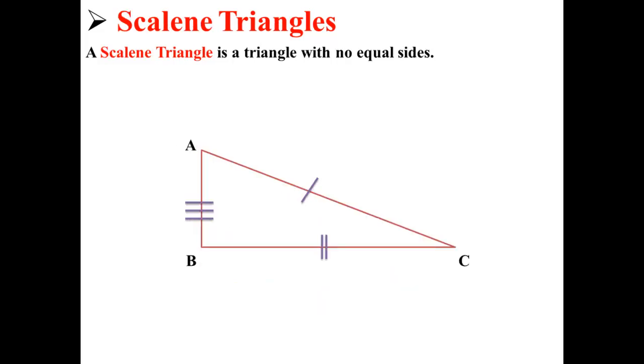And here we have a scalene triangle. A scalene triangle is a triangle with no equal sides. So AB is different from AC is different from BC.